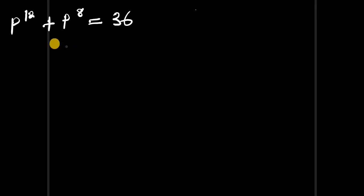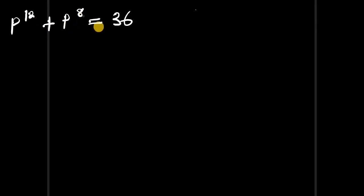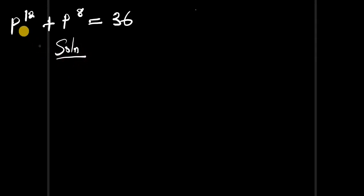Hello, how to solve this nice exponential equation. We have p to the power of 12 plus p to the power of 8 equals 36. We have a solution, so p to the power of 12 we can rewrite this.